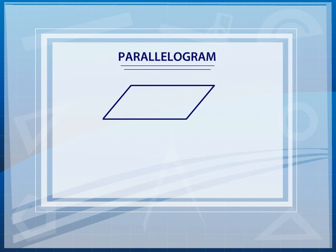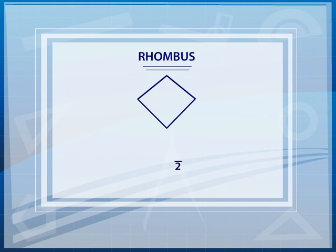The area of a parallelogram is the base times the height. To find the area of a rhombus, multiply the length of the two diagonals and divide by 2.